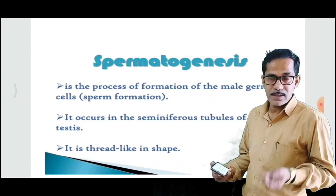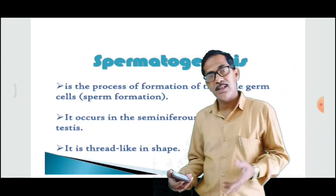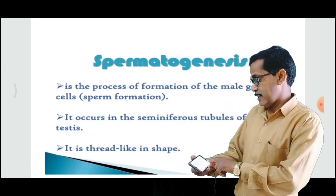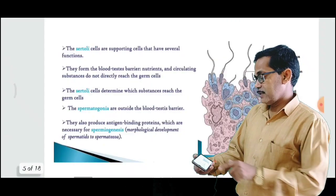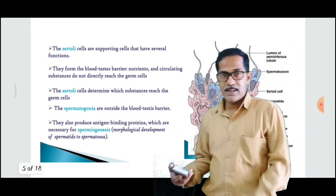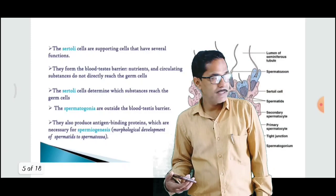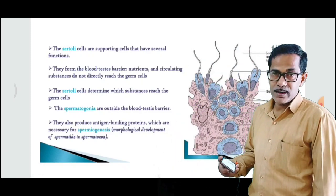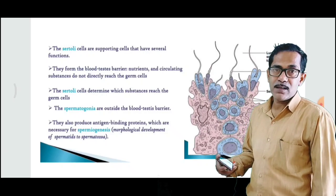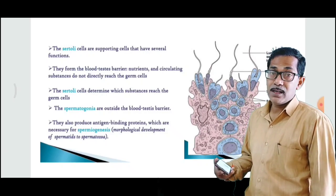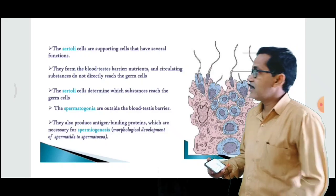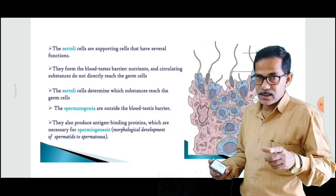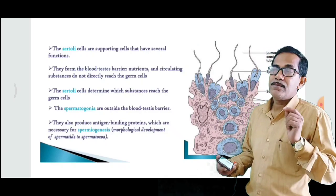Inside the testes are the germinal epithelium cells. In the germinal epithelium cells, there is a mitosis division. This occurs inside the testes in the seminiferous tubules. Seminiferous tubules is the main site of spermatogenesis, where male germ cells are found. It is also called germinal epithelium cells. In the germinal epithelium cells, there is first a mitosis division, and then there is a meiotic division.